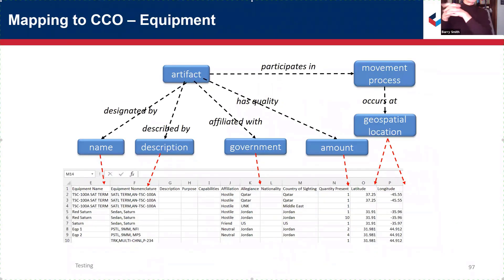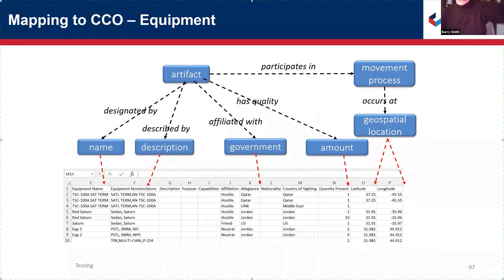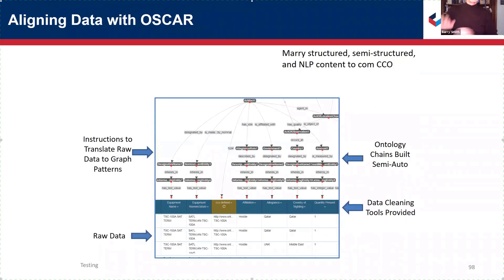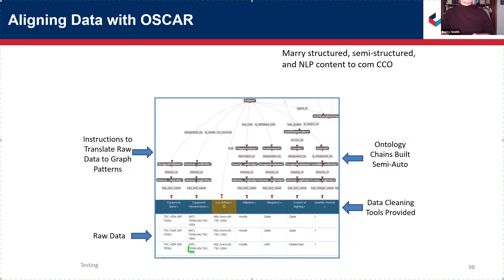One way the common core ontologies are used is by taking large databases. Yesterday I talked about the large number of government repositories with catalogues and taxonomies attached to them. We take data of that sort and then use the common core ontologies to tag the column headers in such data tables. This turns out to be a very efficient way of acquiring semantically enhanced data. In principle, we can create ontologies of the data we have at very high levels using a tool called OSCAR, which creates ontology chains semi-automatically from raw data.